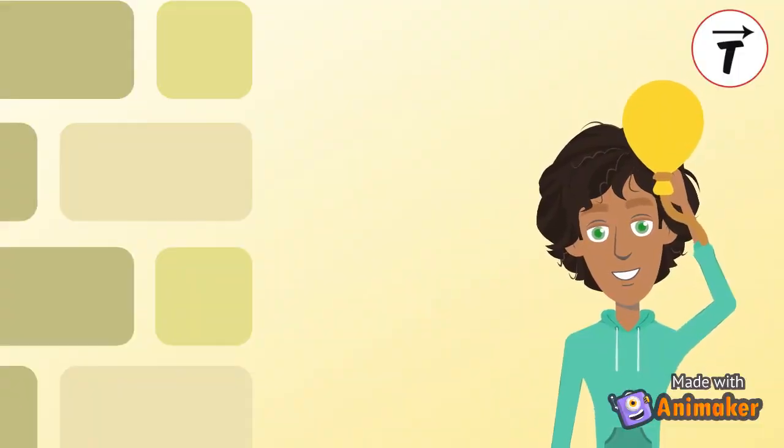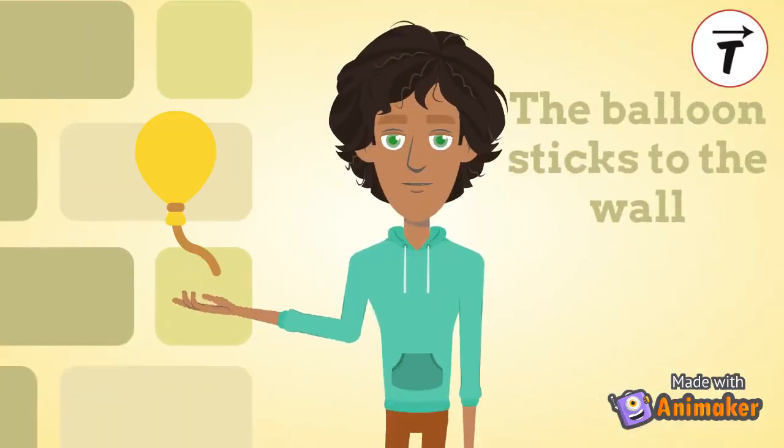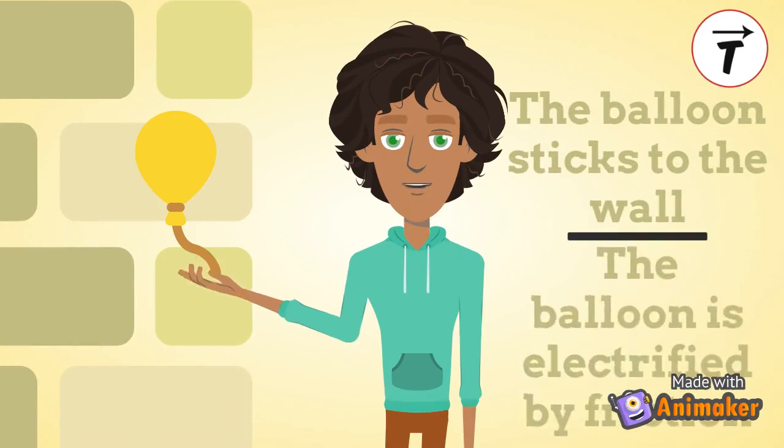I will speak about electrification by friction. I rub the balloon against my hair. The balloon becomes electrified by friction. Some electrons are transferred between the balloon and my hair. The balloon is attracted to the wall indicating that the balloon has electrified.